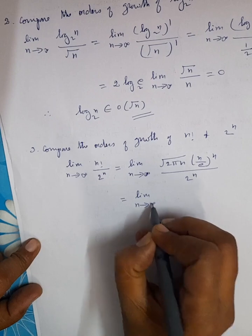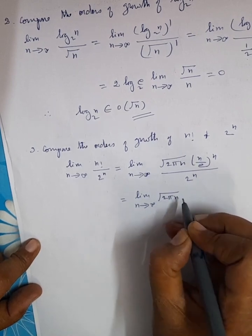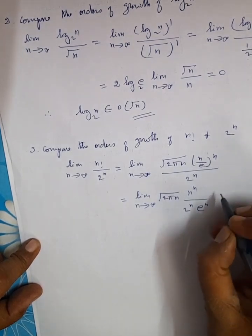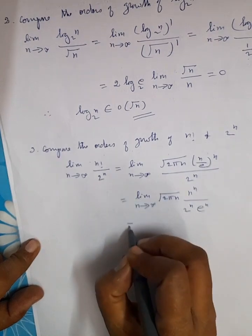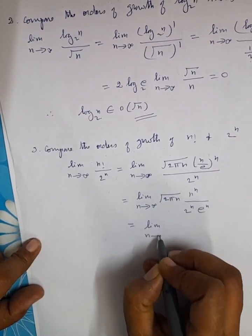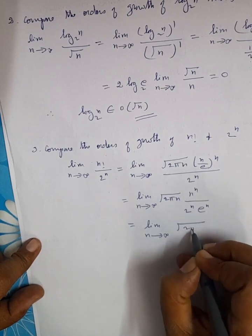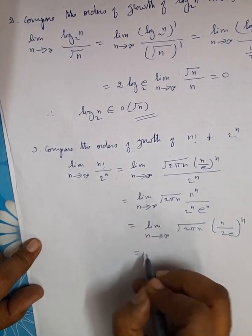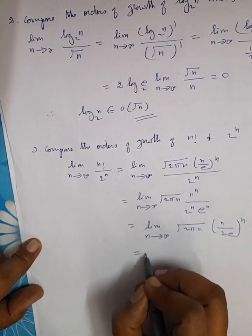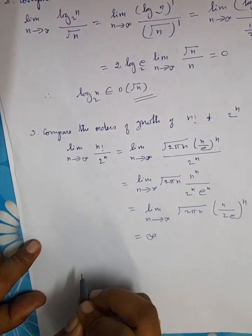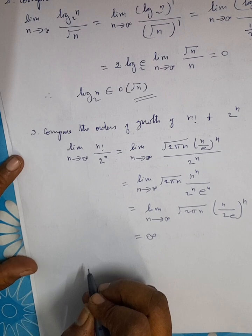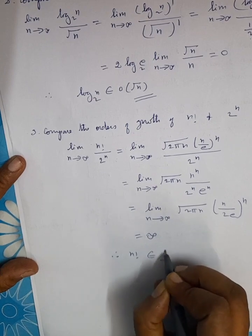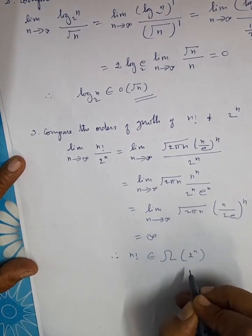Simplifying, we get limit n tends to infinity of √(2πn) · nⁿ divided by 2ⁿ · eⁿ, which reduces to (n/2)ⁿ growing without bound. Applying the limit gives infinity. Thus, though 2ⁿ grows very fast, n! grows still faster. Therefore n! is in Big Omega of 2ⁿ.